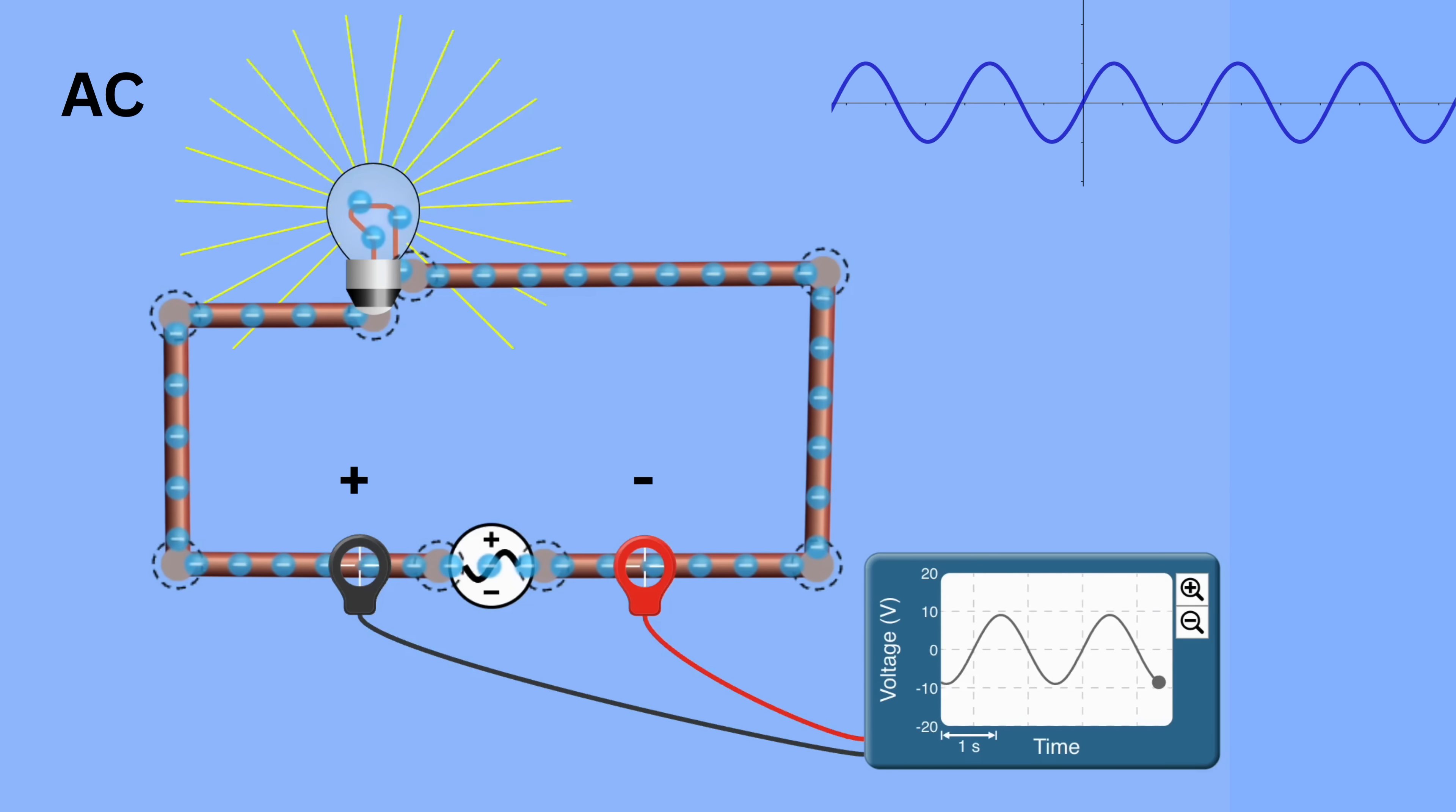This part of the sinusoidal wave, which is positive, implies the terminal becomes positive, and this part of the sinusoidal wave, which is negative, implies the terminal becomes negative. So, in one cycle, the polarity is changed two times.